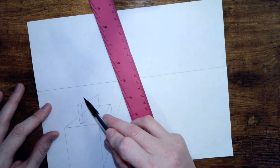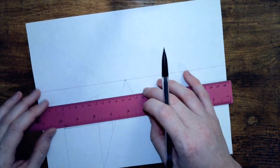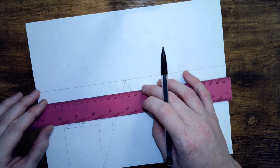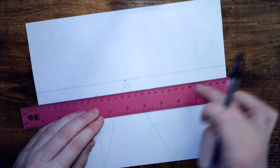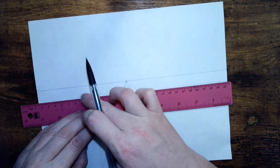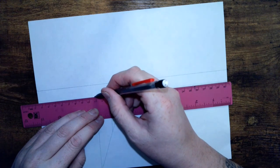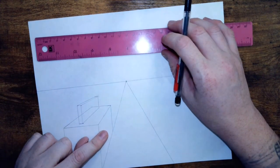Now where those two meet, I need to draw a line straight across using my ruler. Don't just freehand it. Making sure it's parallel to the horizon line, and just make a small mark. And there you are.